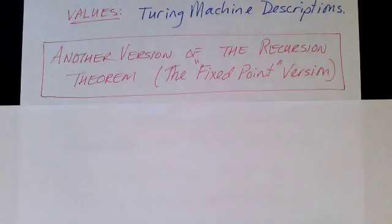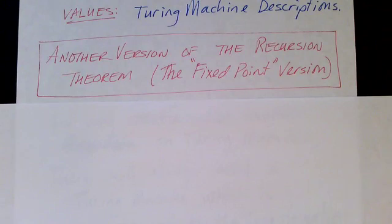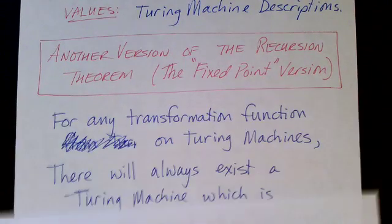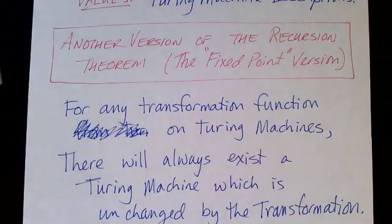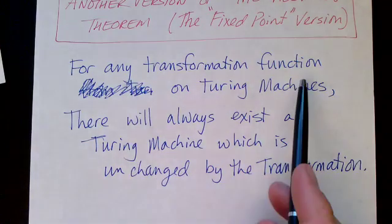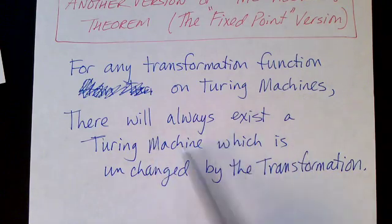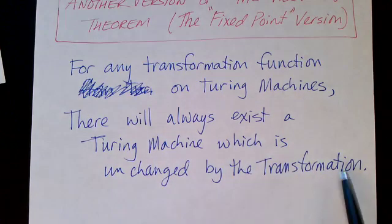Now we can state the recursion theorem in a slightly different version. For any transformation function on Turing machines, there will always exist a Turing machine which is unchanged by the transformation.